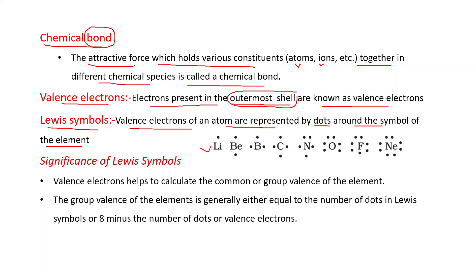For example: lithium, beryllium, boron, carbon, nitrogen, oxygen, fluorine, neon — and these dots represent the number of valency electrons present in these elements. In fluorine, seven valency electrons are there, that's why seven dots are there. In nitrogen, five valency electrons are there, so five dots around the nitrogen.